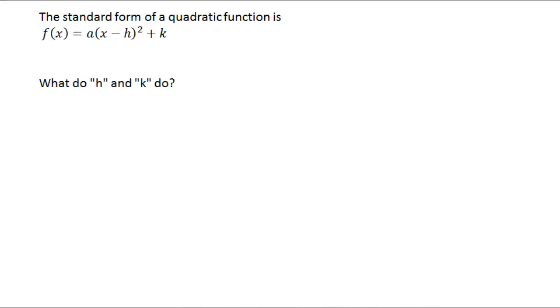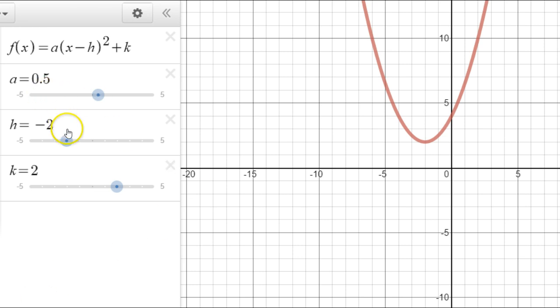The standard form of a quadratic function is f(x) = a(x - h)² + k. So what do h and k do? I'm going to fix a at 0.5 and watch what happens as I change h. When h is positive 4, this point right here moves over to positive 4.